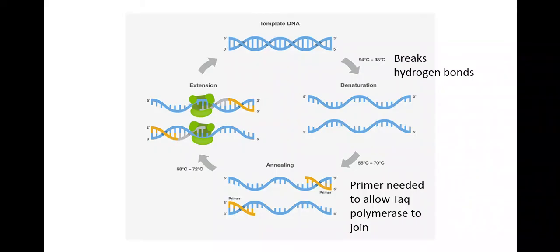So once my primer has annealed, I then get my taq polymerase joining on, which means that once it's heated up to the optimum temperature for the enzyme taq polymerase, which is the green thing here.